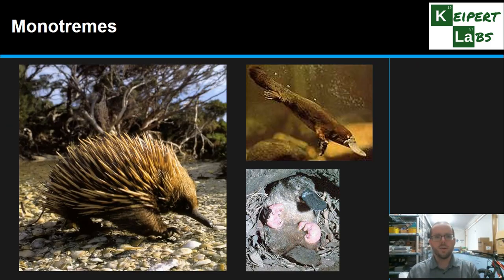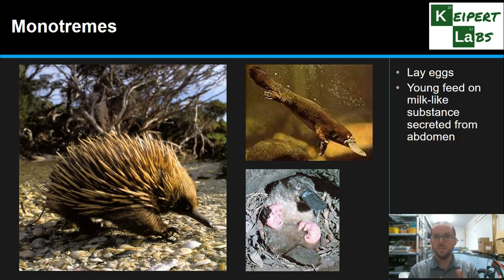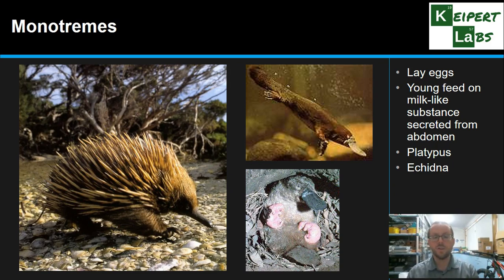The third category is the odd ones out, again particularly in an Australian context: mammals that lay eggs as opposed to giving birth to live young. The young feed on a milk-like substance secreted from the abdomen of the mother. The platypus and echidna are two examples. Monotremes are very uncommon, but they do exist, and they fit the characteristics of other mammals in all other areas — just with eggs instead of live birth.